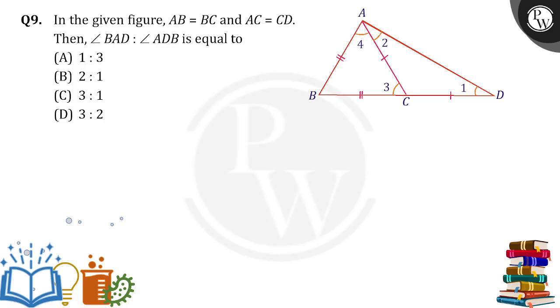Hello everyone. In the given figure, AB is equal to BC and AC is equal to CD. Then angle BAD to angle ADB is equal to how much?